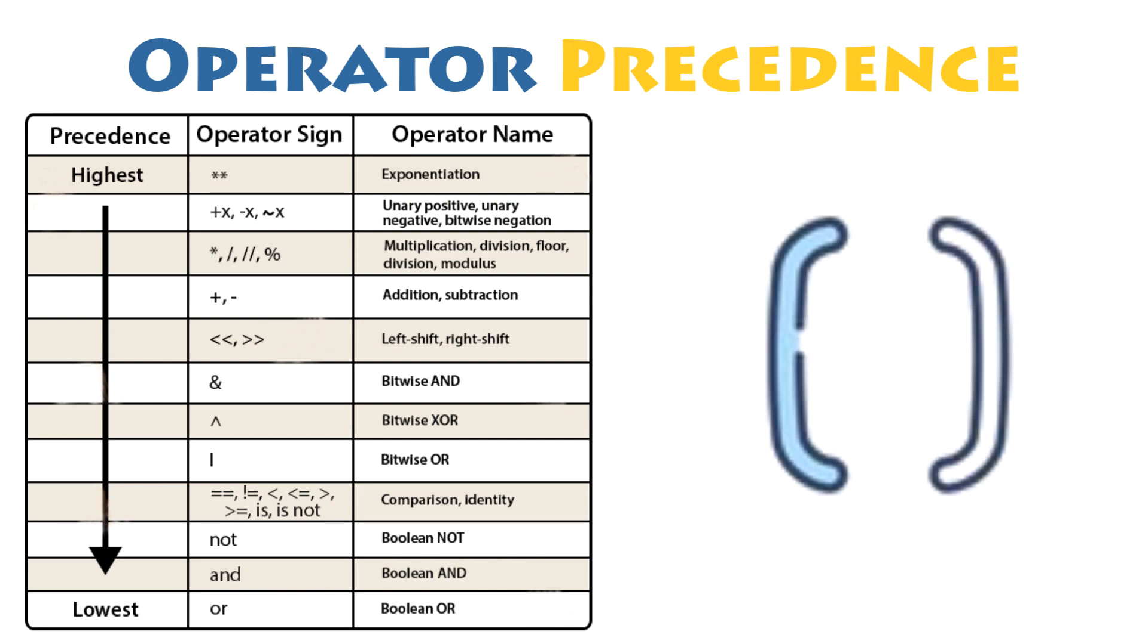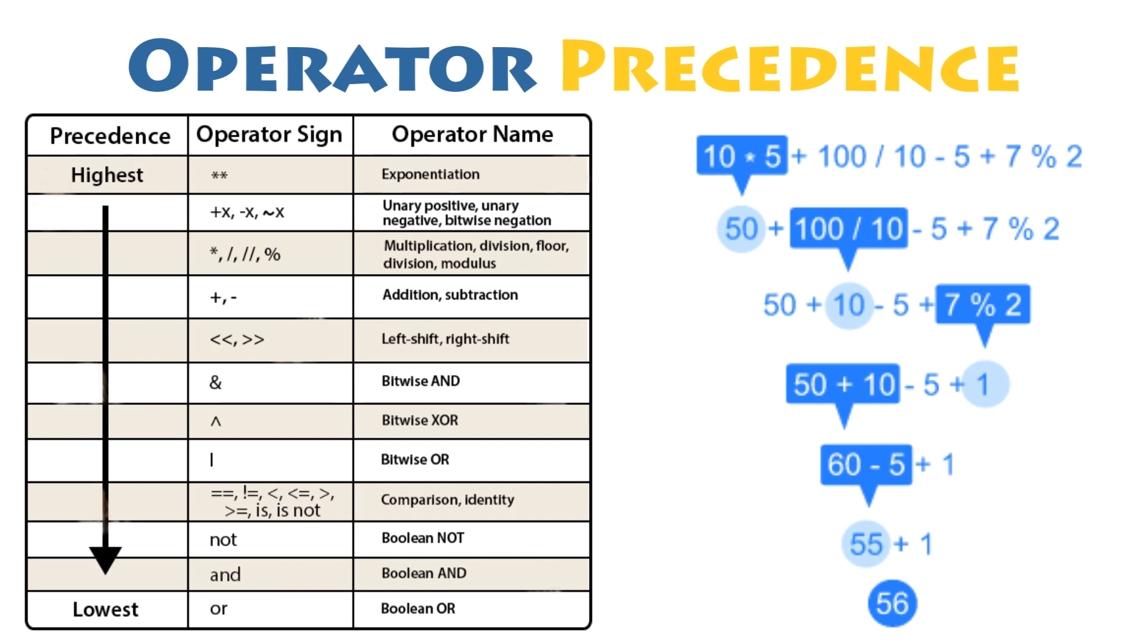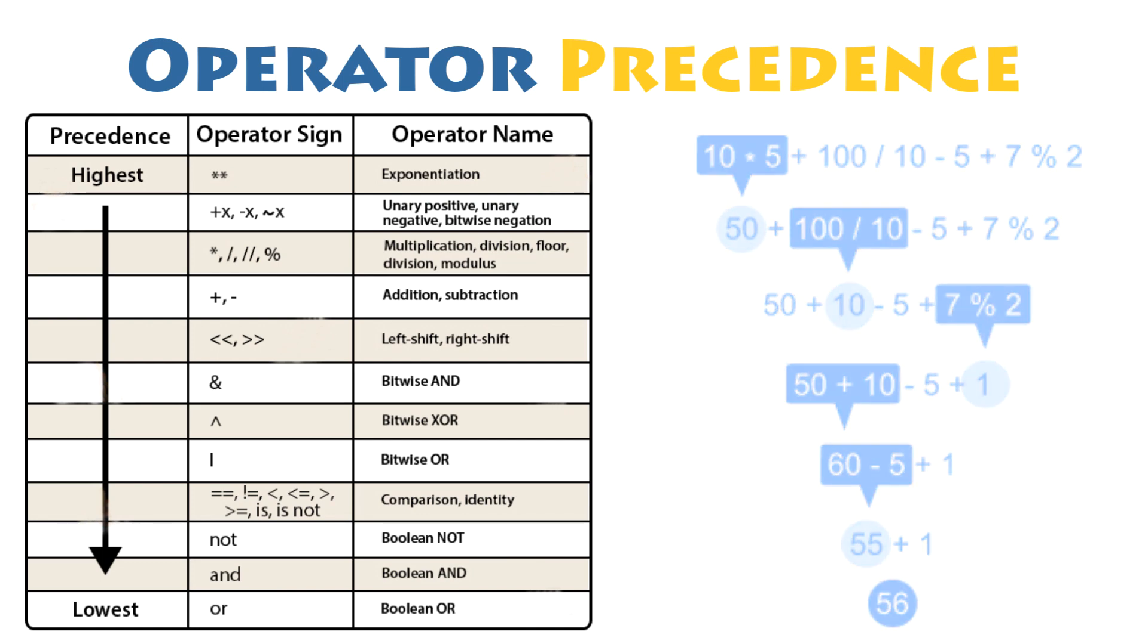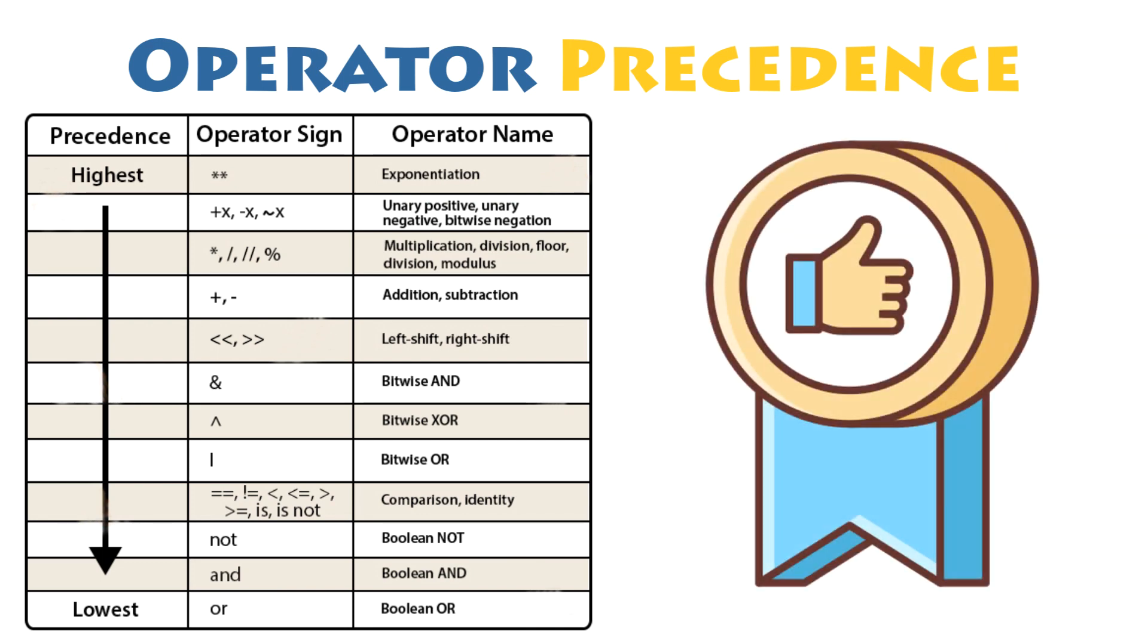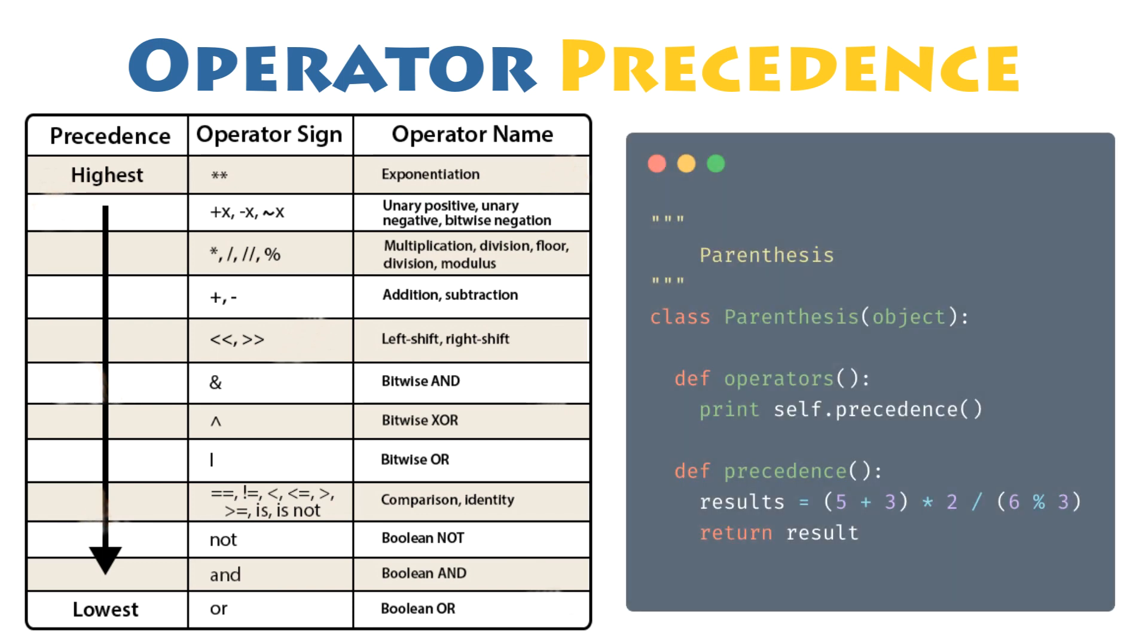Operator precedence can be overridden using parentheses. Expressions in parentheses are always performed first and before expressions that are not parenthesized. There is nothing wrong with making liberal use of parentheses, even when they are not necessary to change the order of evaluation. In fact, it is considered good practice because it can make the code more readable, and it relieves the reader of having to recall operator precedence from memory.